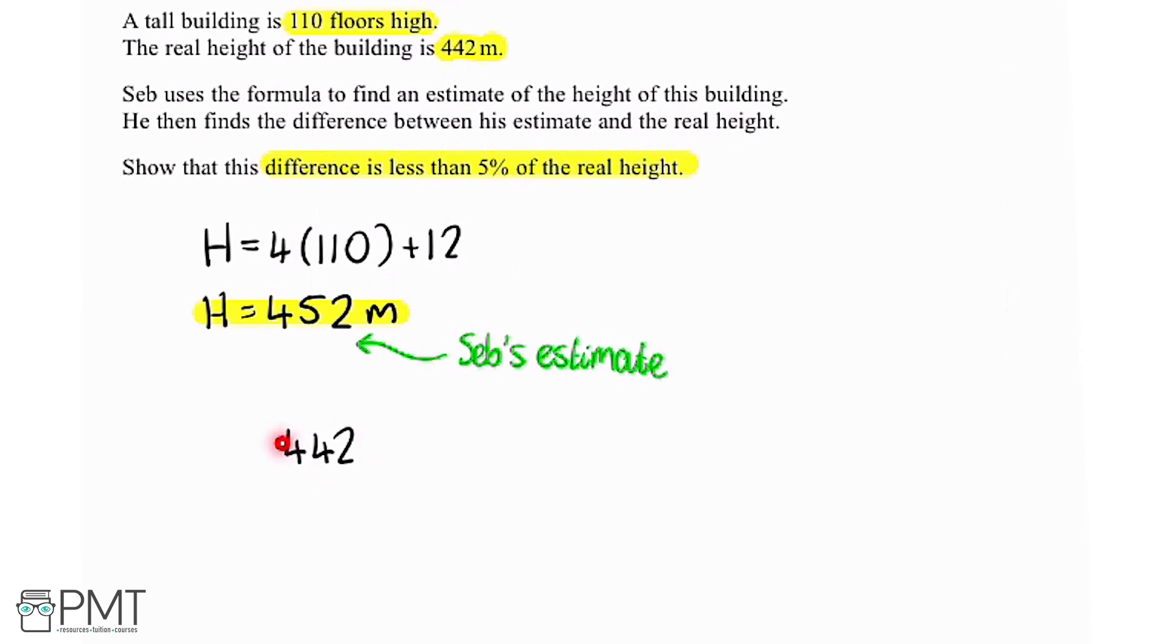Now we can see that the real height is less than Seb's estimate. So what I'm going to do is take the real height and increase it by 5%. If this number is less than the increased number, the difference is less than 5% of the real height. Or if this is outside of that range, we know that it's not.